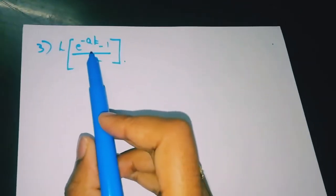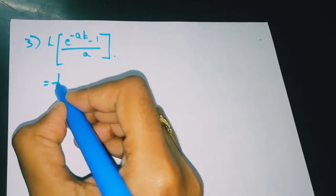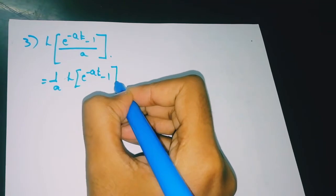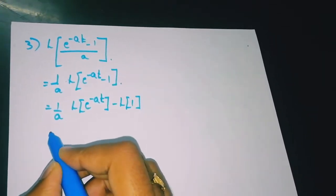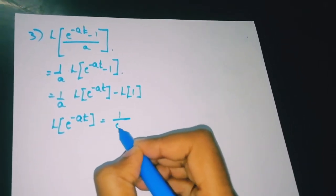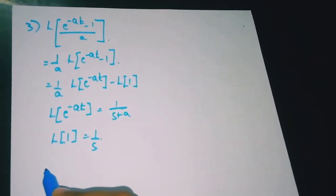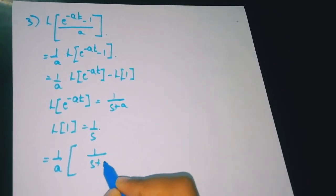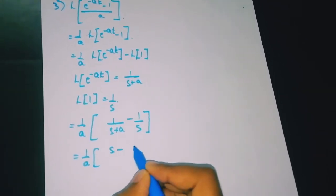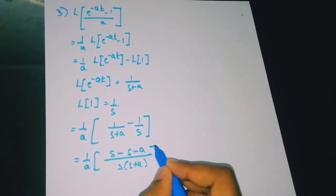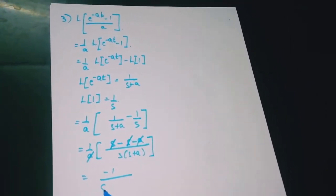Coming to the third problem: Laplace of (e^(−at) − 1)/a. Since 1/a is a constant, we take it outside: (1/a)·[Laplace of e^(−at) − Laplace of 1]. Laplace of e^(−at) is 1/(s + a), and Laplace of 1 is 1/s. Substituting: (1/a)·[1/(s+a) − 1/s] = (1/a)·[s − (s+a)] / [s(s+a)] = −a / [a·s(s+a)] = −1/[s(s+a)].